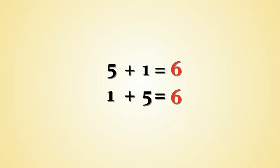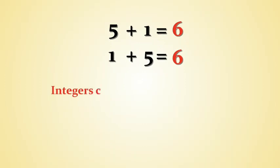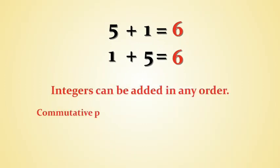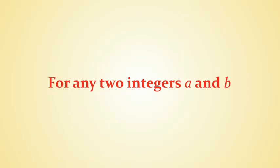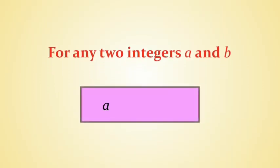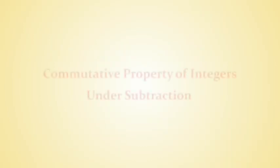This means that a set of integers can be added in any order. This is the commutative property of integers under addition. Hence, addition is commutative for integers. In general, for any two integers a and b, we can say that a plus b is equal to b plus a.